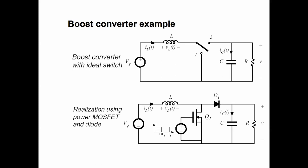In the buck converter, when the switch was connected at position one the inductor current flows through the inductor, but when the switch was at position two there was no inductor involved. In the boost converter, however, the inductor is involved in both cases. To replace the single-pole double-throw switch with a semiconductor device, we can replace it with a MOSFET and a diode. When the MOSFET turns on, switch position one is connected; when the MOSFET turns off, the diode turns on, meaning switch position two is connected.